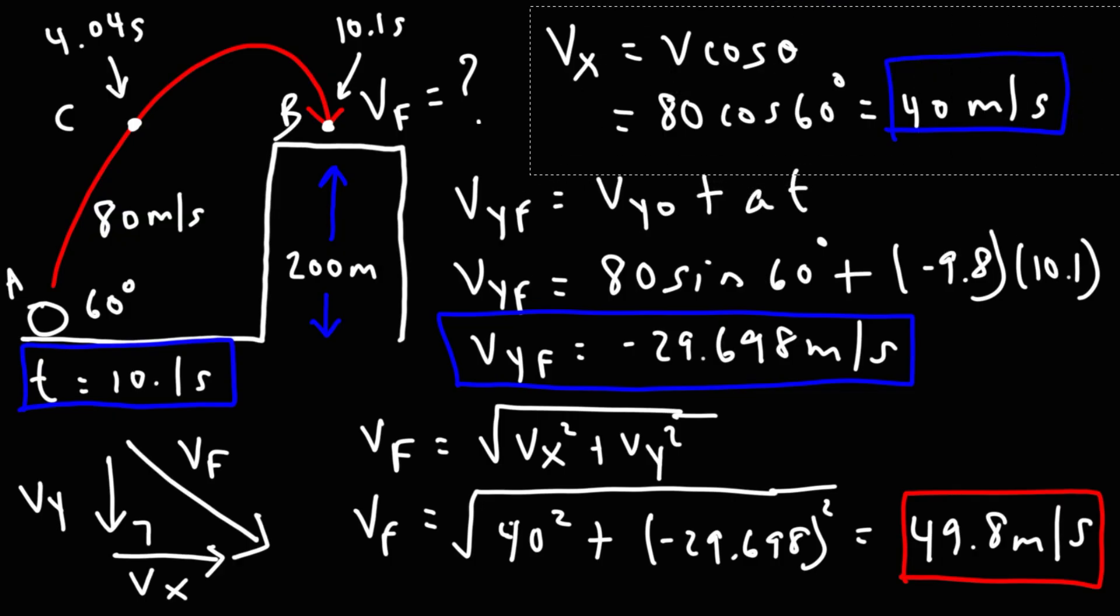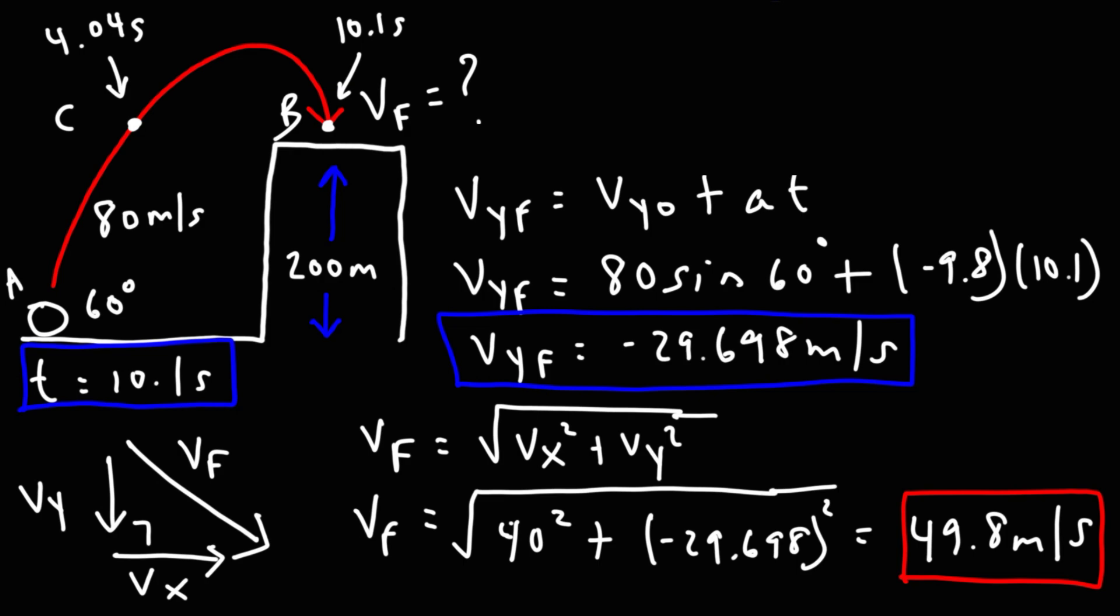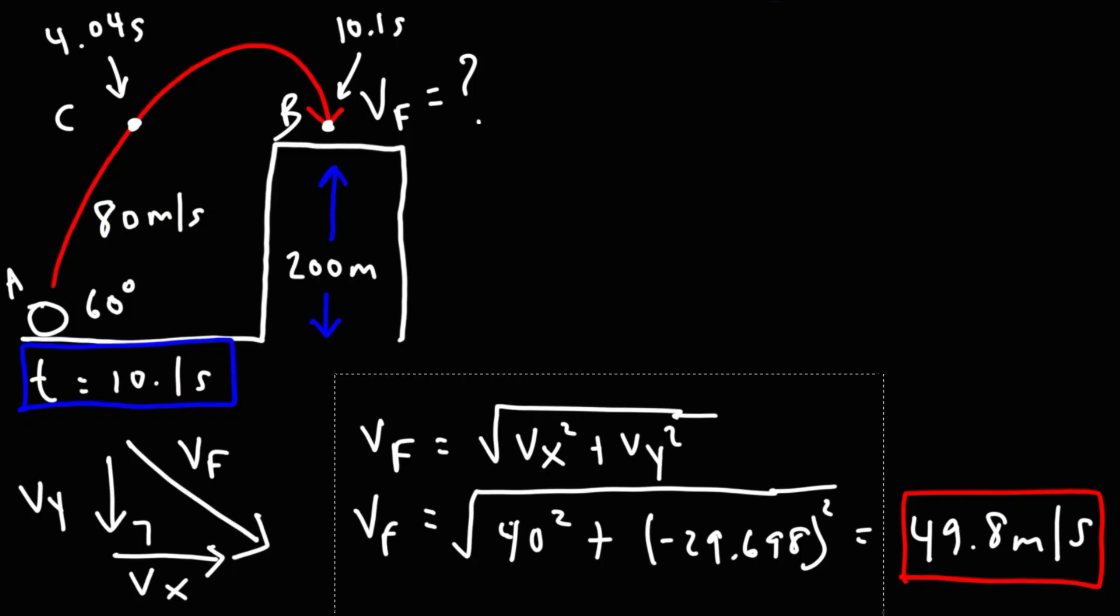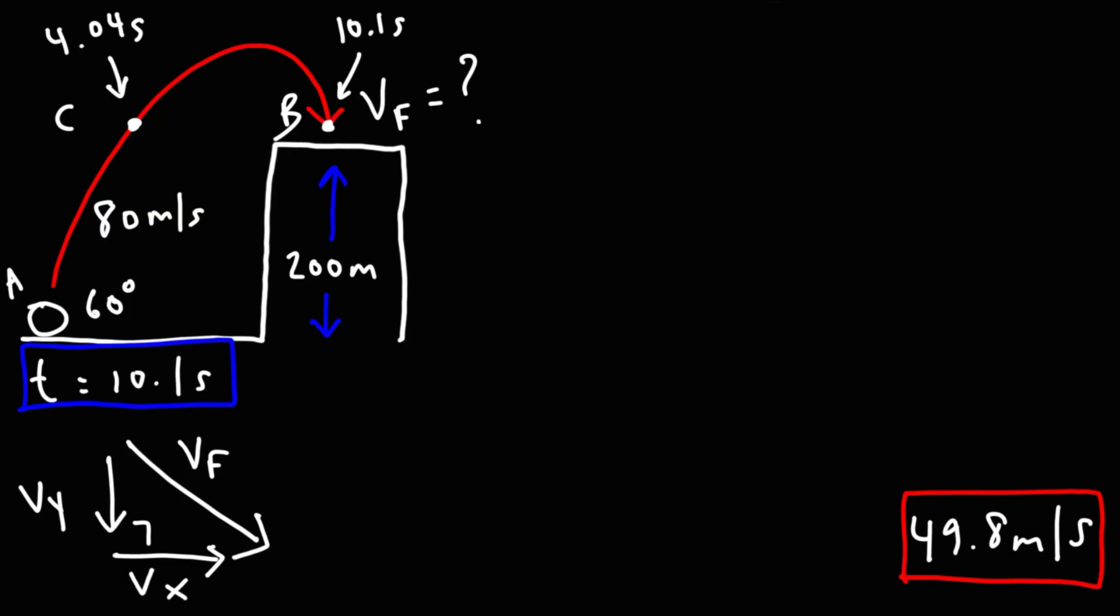Now, we're going to use conservation of energy to get the same answer. This is going to be a lot simpler and a lot faster. So what we need to determine is the types of energies that we have at the beginning and at the end of the trajectory. At point A, the ball is at ground level, so for the most part, it doesn't have any potential energy. So it only has kinetic energy at point A because it's moving. Now, just before it hits the top of the building at point B, the object still has kinetic energy. But at point B, because it's above ground level, relative to the ground, it has potential energy.